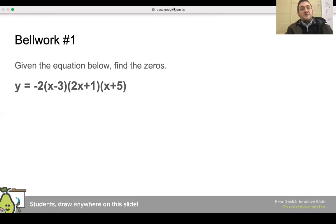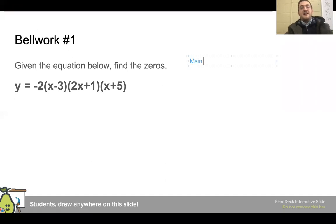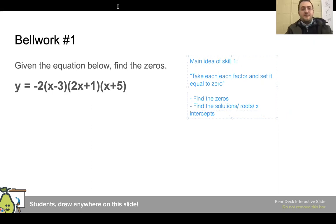All right. So the main idea here on this first problem, this is your skill one problem. The main idea of skill one is to take each factor and set it equal to zero. And when we find the zeros, that's one way we could ask the question, find the solutions, roots, x-intercepts. These all mean the same thing. So let's actually kind of demonstrate with this one. Now, this first one, I have a negative two, and we set that equal to zero. And I know that negative two is not equal to zero. So I'm just going to kind of cross that out and ignore it. But then the other ones I do have some nice, well behaved factors that are going on. So I have x minus three equals to zero. And I'm going to add three both sides. And I get that x is equal to three.